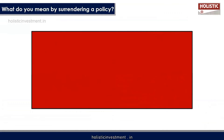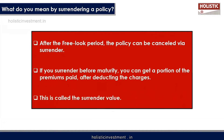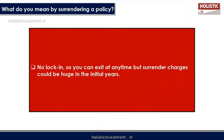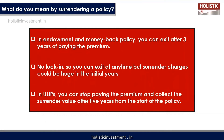If you wish to cancel your policy after the free look period and the policy has not been mis-sold to you, you can surrender your policy. If you surrender before maturity, you can get a portion of the premium paid after deducting charges — this is called surrender value. For traditional products such as endowment and money back policies, you can exit after 3 years of paying premiums, though surrender charges could be high in initial years. For ULIPs, you can collect the surrender value after 5 years from the start of the policy.